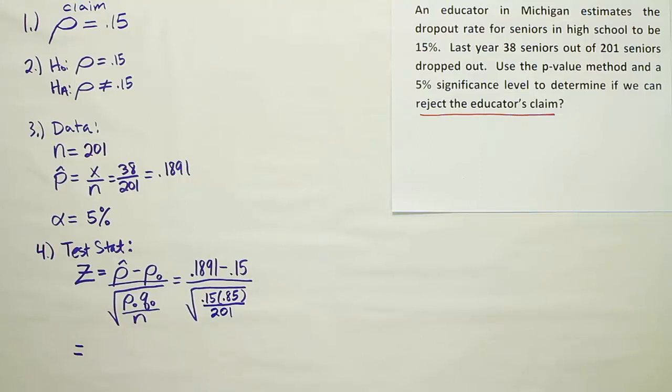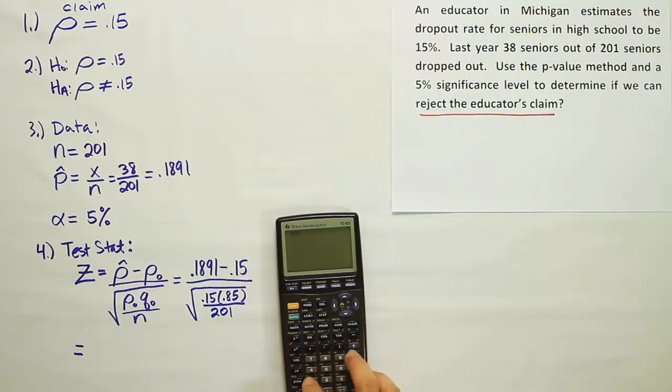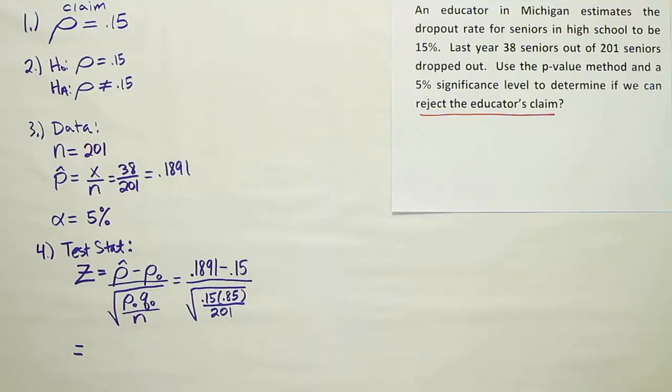Let's see what all that gives us as we work it out in our calculator. So we'll have 0.1891 minus 0.15. That'll be divided by the square root of 0.15 times 0.85 divided by 201. And when we finish all that, we get 1.55. So our test stat is 1.55.